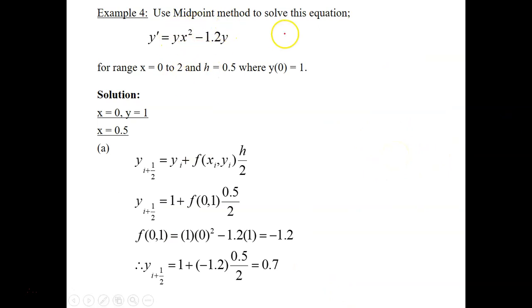Use midpoint method to solve this equation. So this is already in the derivative form—this is the slope dy/dx: y' = yx² - 1.2y. Range is x equals 0 to 2 and step size is 0.5. First and foremost, list your data points. The first one is x = 0, and the initial condition when x equals 0, y equals 1. So your step size is 0.5, so the next point should be 0.5, and then 1.0, 1.5, 2.0, because it says here that x from 0 to 2.